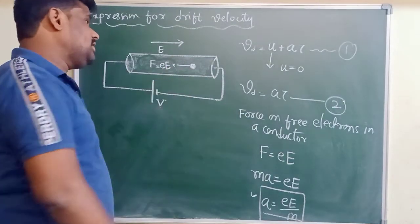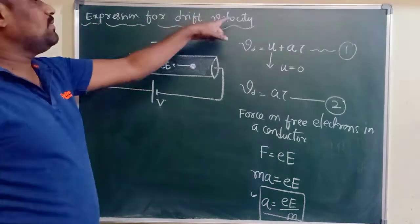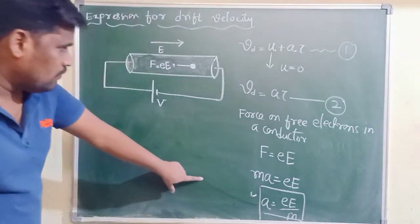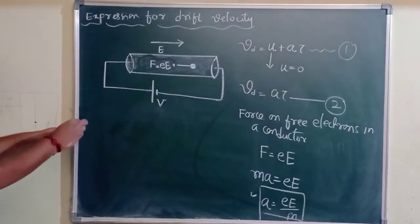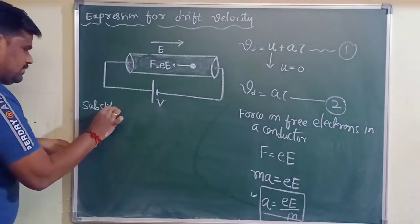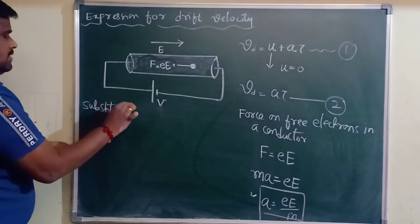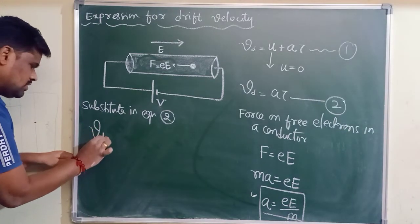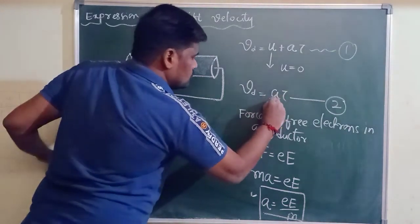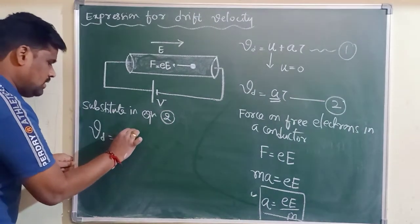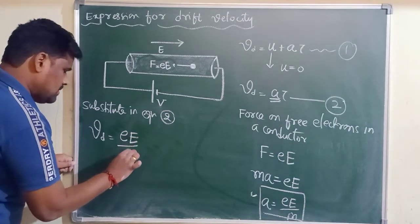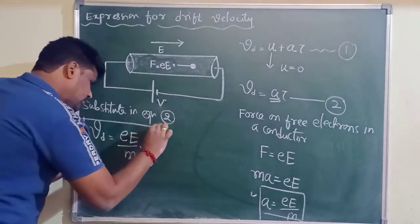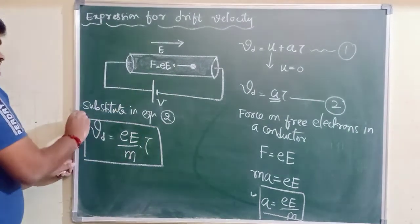Now I will calculate the velocity of the free electron in the conductor, which we call drift velocity. Substituting the value of A into equation 2, we get Vd = (eE/m)·τ. This is the expression for drift velocity of free electrons in a conductor.